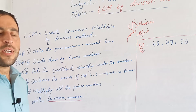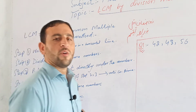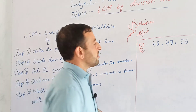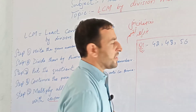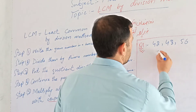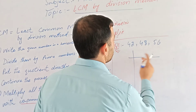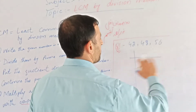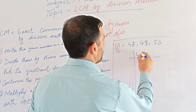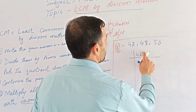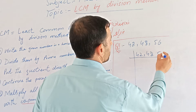If you have a horizontal line, Step 1 is to write the given numbers. The question uses 42, 48, and 56. You can see that horizontal line — write 42, 48, and 56 in a horizontal line.